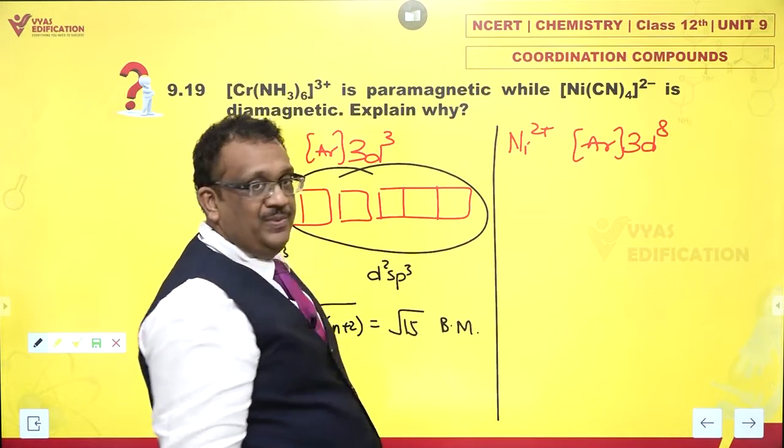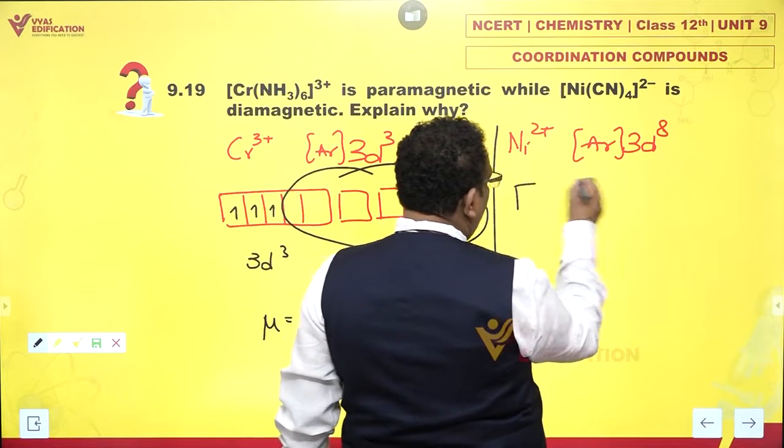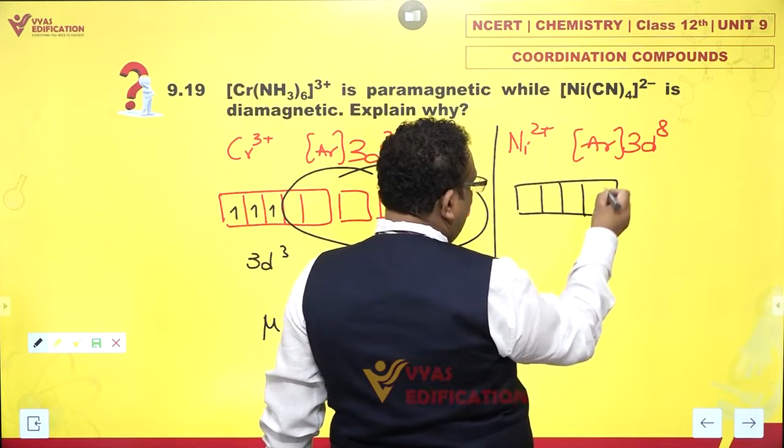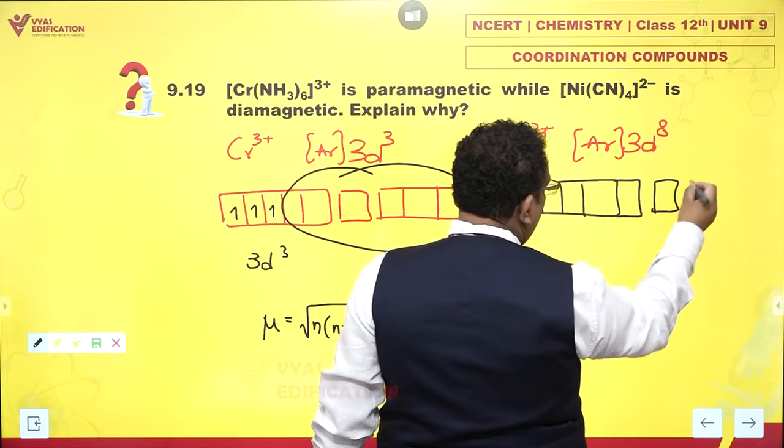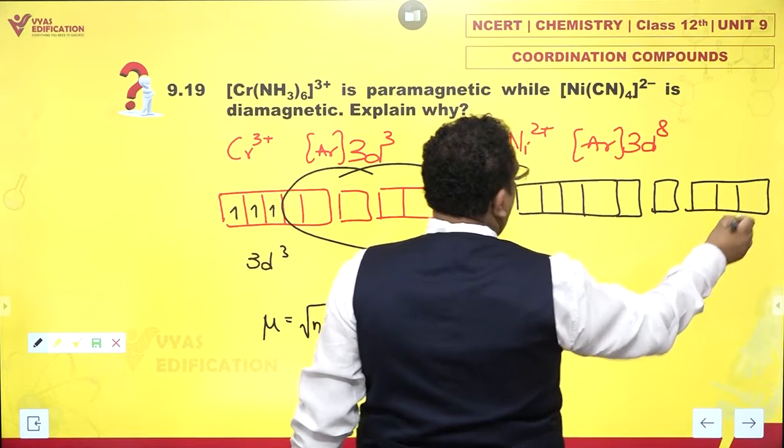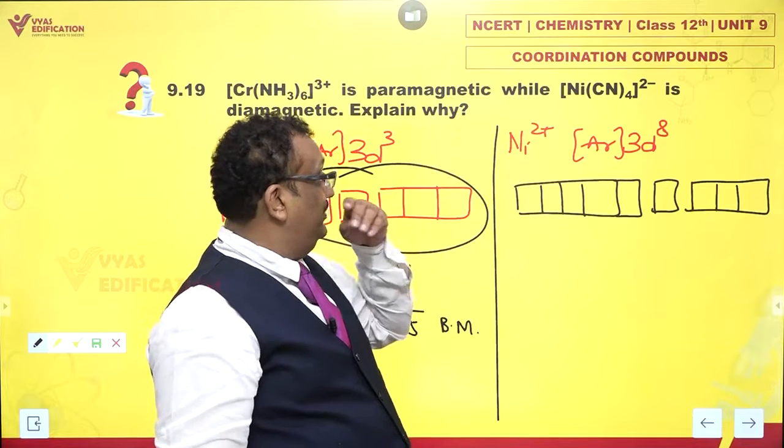What about nickel? Let's take a look at the electronic configuration of nickel. Let us not forget that cyanide ions are the really ugly ones. They wield out of power and they can pair up things.